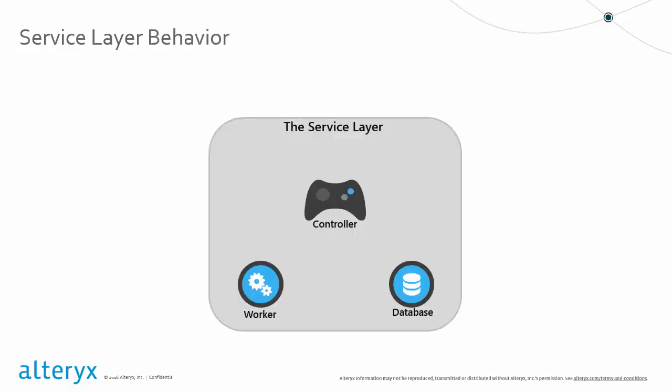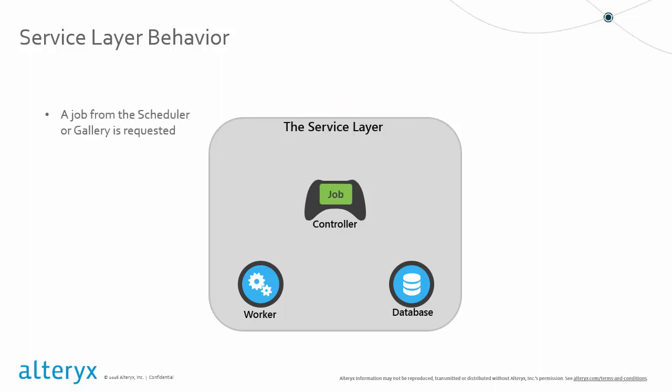Let's take a look at the service layer behavior and see what happens. Here we have an example of what happens inside the service layer when a job is requested and passed to the service. The job being represented can originate from either the designer via the scheduler, or from the gallery. When the job request is sent through the service layer, it is immediately directed to the controller component.